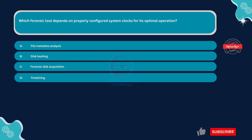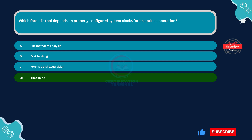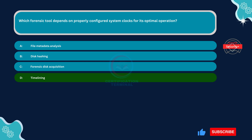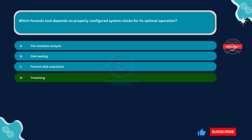The correct answer is Option D: Timelining. Timelining involves analyzing timestamps from various sources, such as file metadata, system logs, and registry entries, to create a chronological timeline of events on a system. Properly configured system clocks are crucial for timelining because accurate timestamps are essential for reconstructing the sequence of events accurately. If system clocks are not synchronized, it can lead to inaccuracies in the timeline analysis, affecting the overall reliability of the forensic investigation.